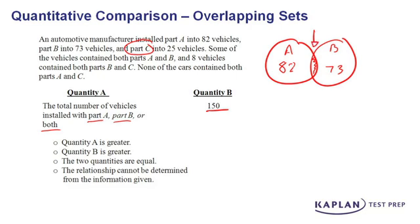We know that there are 82 vehicles with part A. We know there are 73 vehicles with part B. And in the question stem, it says that some vehicles had both parts A and B. So some vehicle somewhere has both parts. Well, what's the smallest number we can make this overlap section?